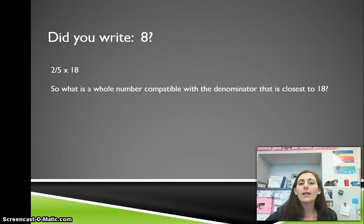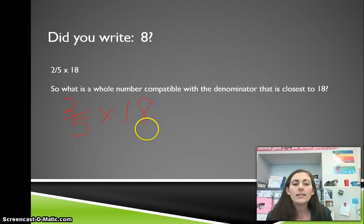Did you write 8? If so, great job. We have two-fifths times 18. What is a whole number compatible with the denominator? So we have two-fifths times 18. Here's my whole number. What is a compatible number with the denominator that is closest to 18?